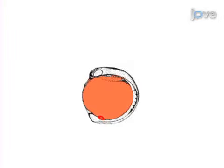Next, injected embryos that have fluorescent morpholinos only in the yolk cell and the KV are selected for further analysis.